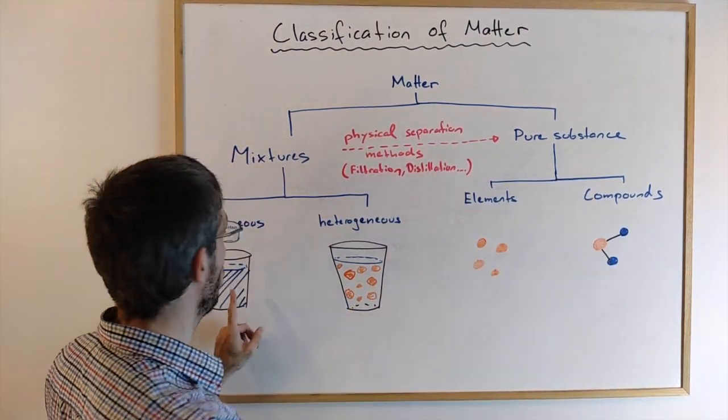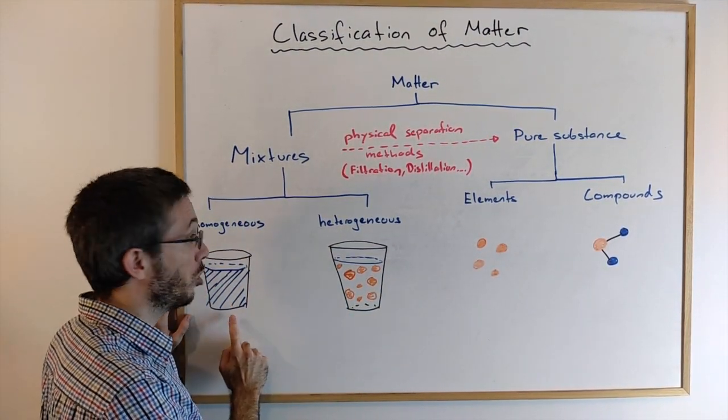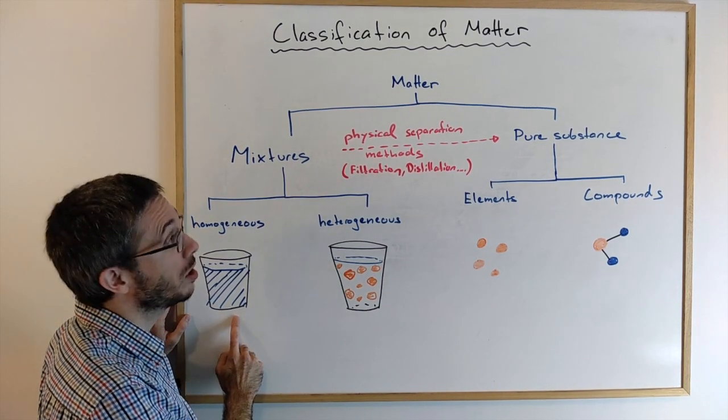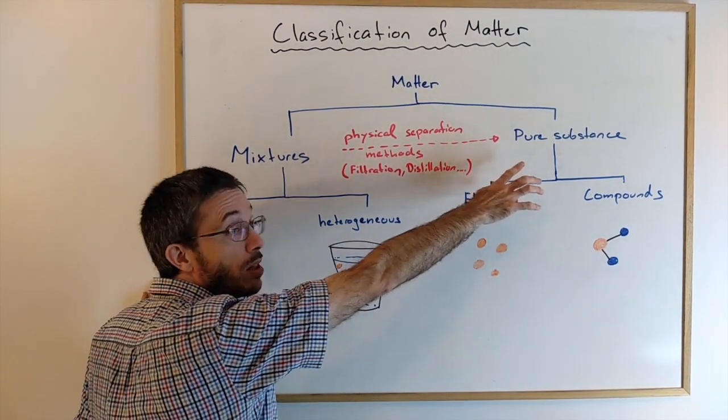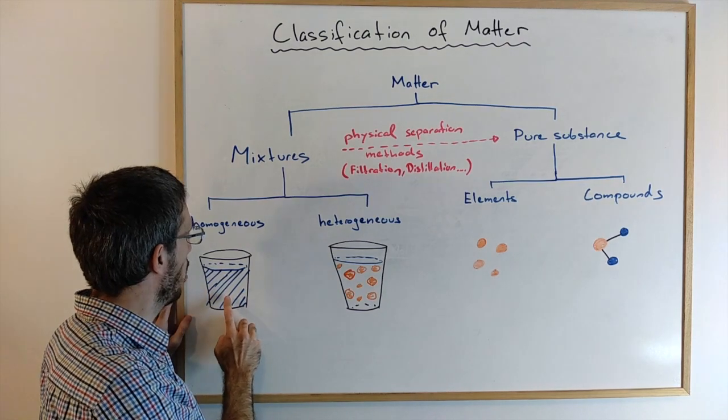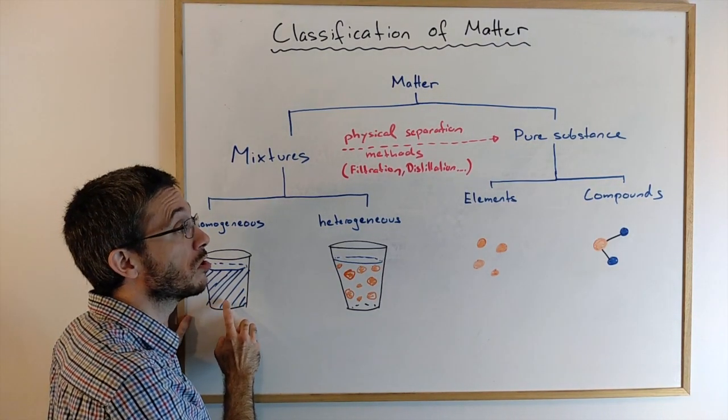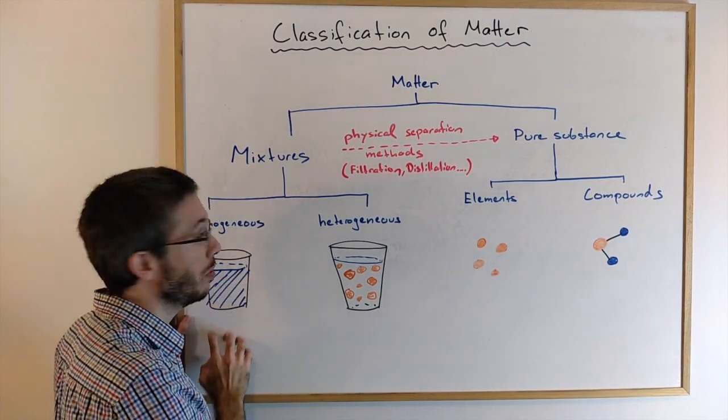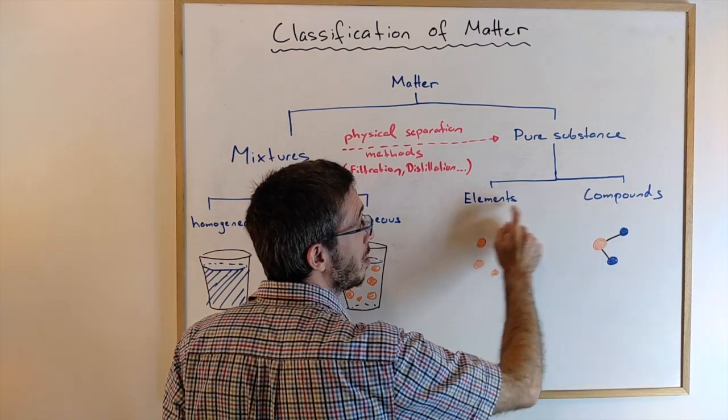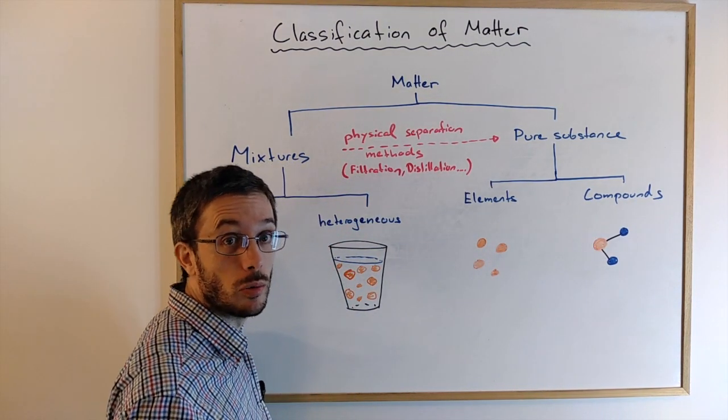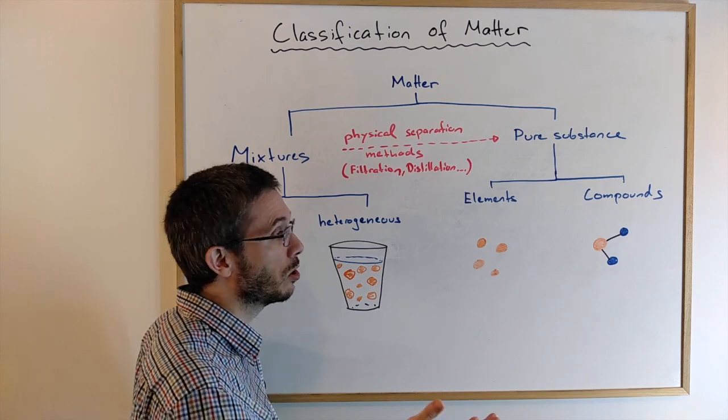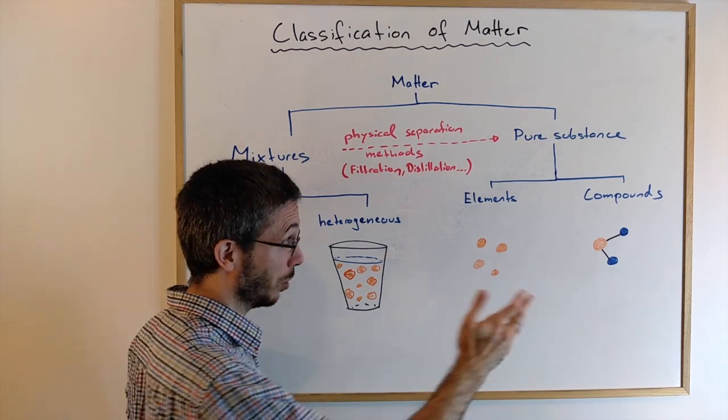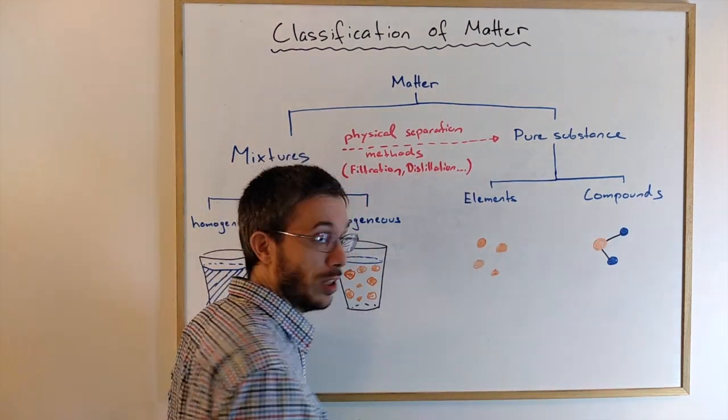The tricky one is to distinguish homogeneous mixtures from pure substances because you can't really know by looking at it. It will just look the same, all the same everywhere. The distinction between elements and compounds is also quite more difficult. You cannot know this by just looking. You will actually have to do some experiments to figure it out.